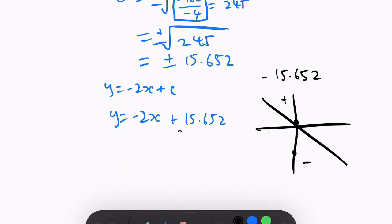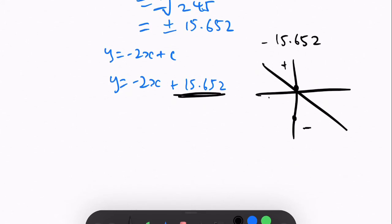So that's why positive 15.652 is correct. So that's the equation for a straight line, and now what we do is that we calculate x by substituting y equals 0,